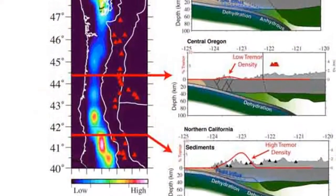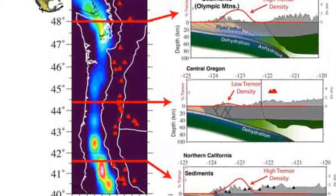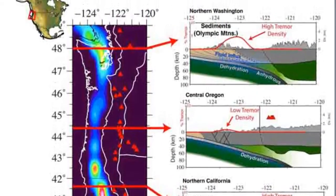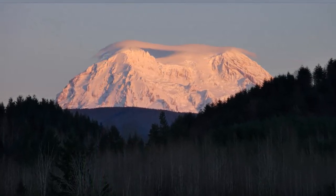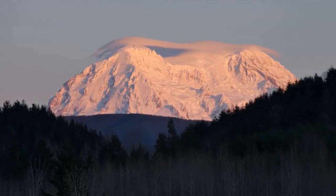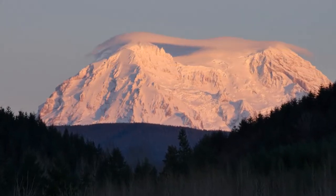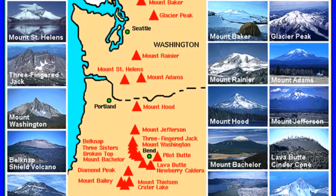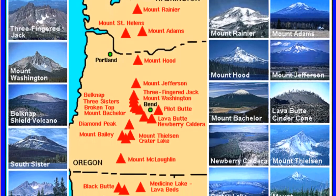Magma that loses its mobility before reaching the surface eventually crystallizes at depth. Igneous rocks that form at depth are termed intrusive or plutonic. Intrusive igneous rocks would never outcrop at the surface if portions of the crust were not uplifted and the overlying rocks stripped away by erosion. When a mass of crustal rock is exposed, not covered with soil, it is called an outcrop.